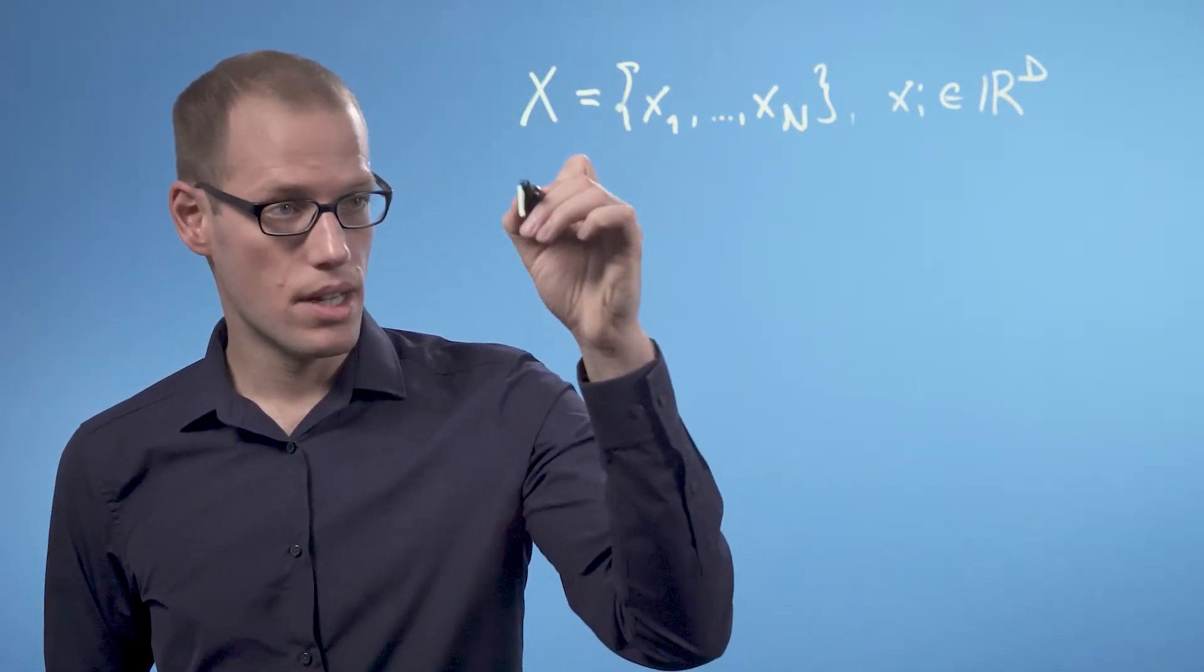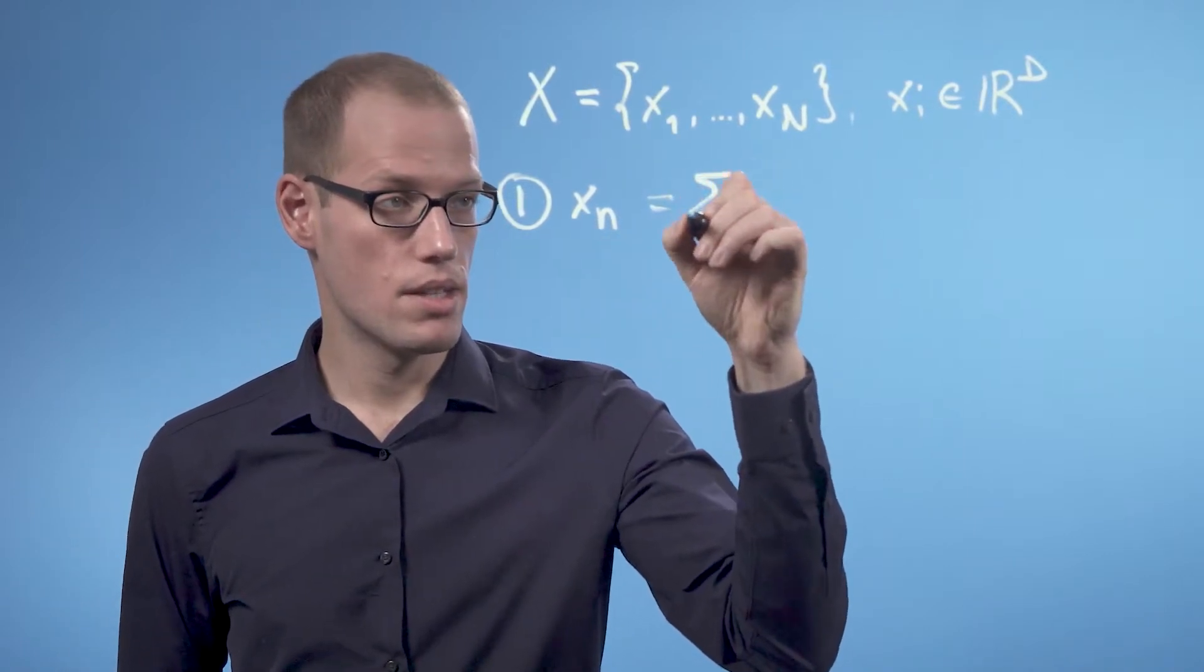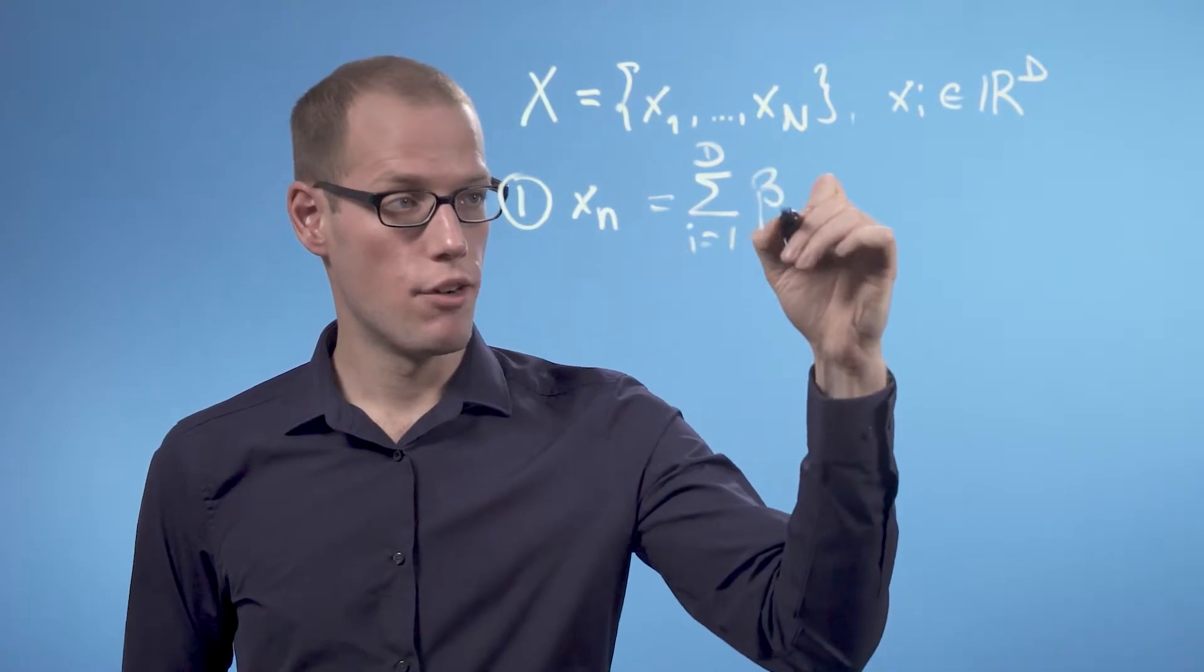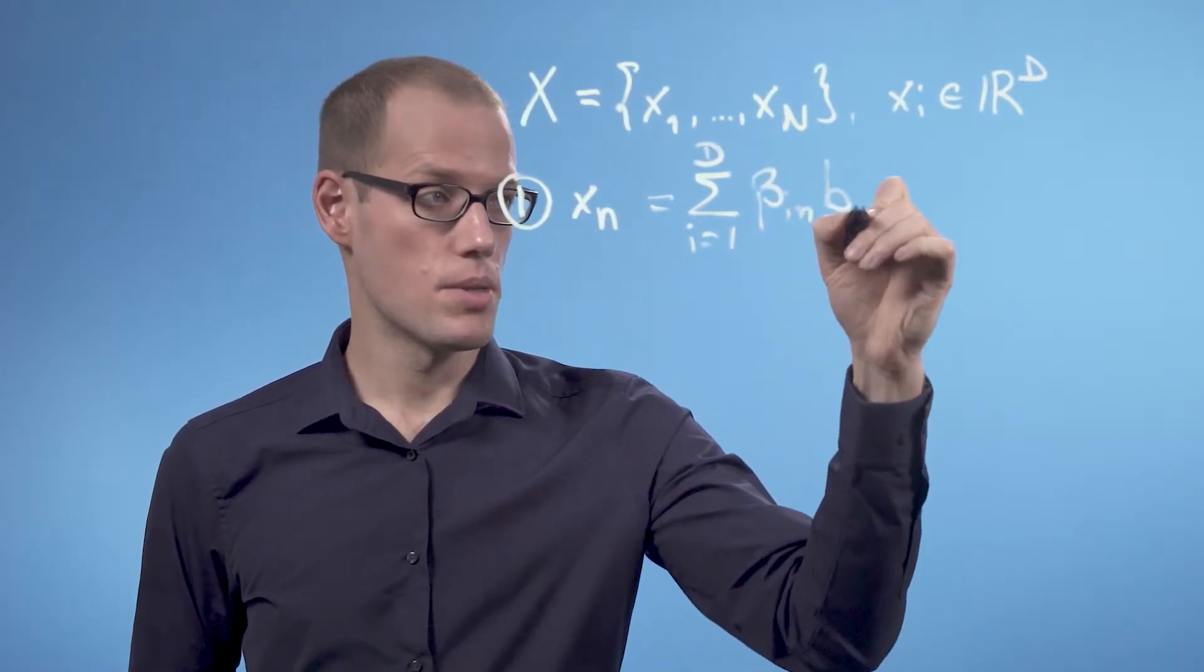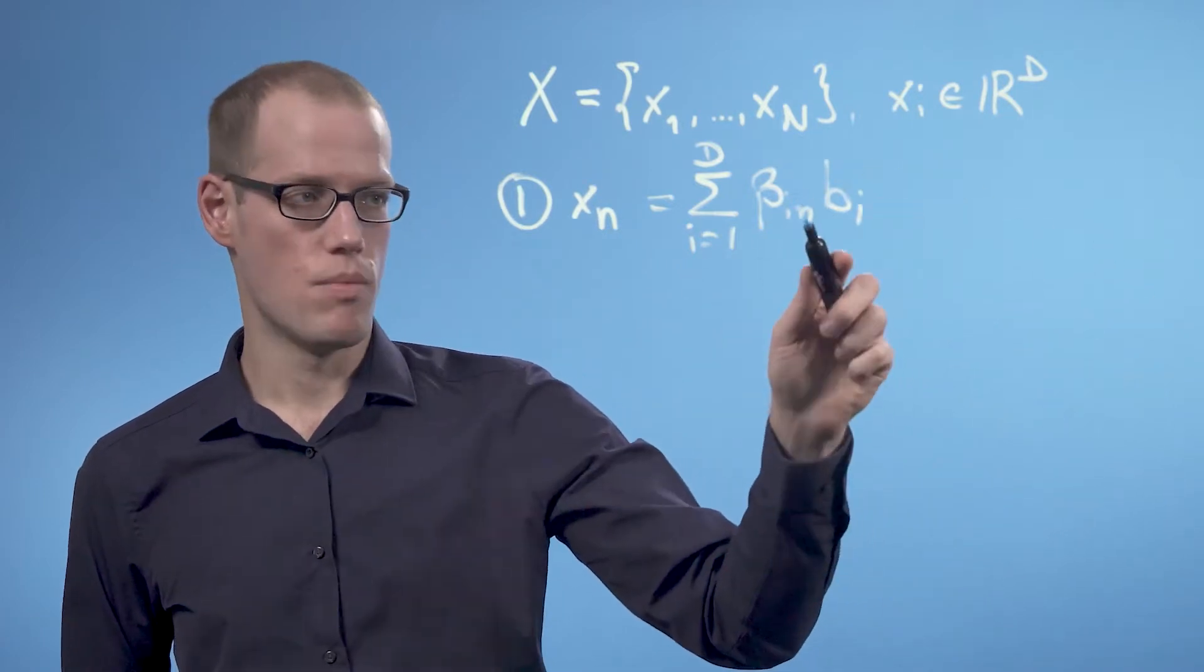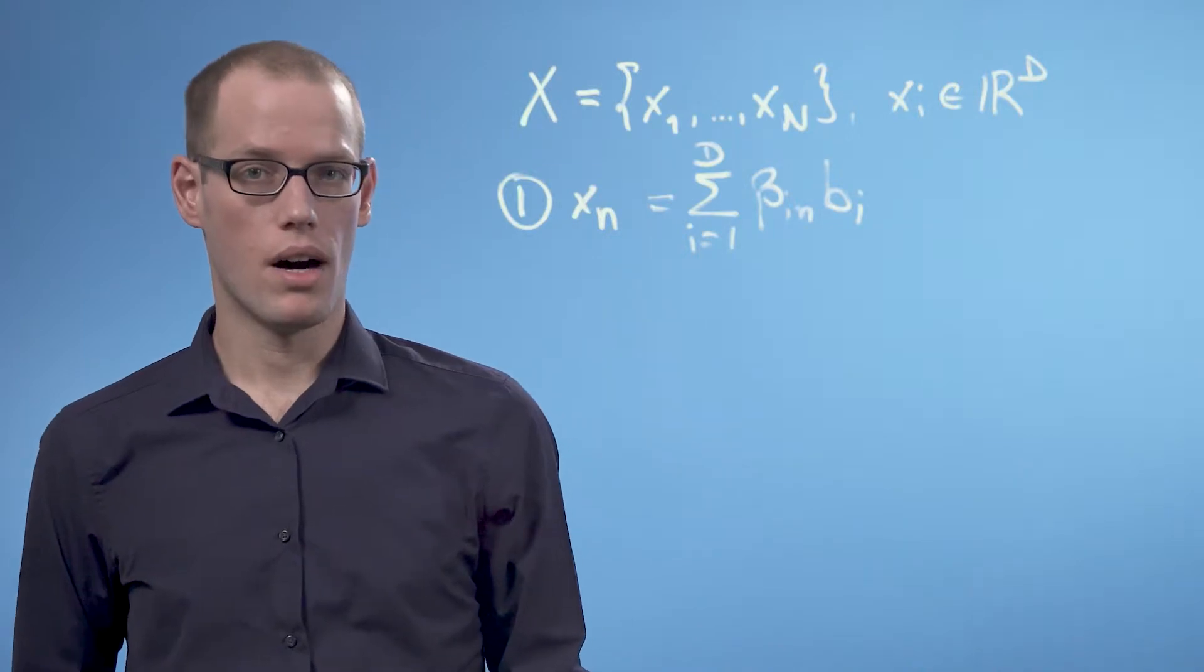So let's write this down. X_n can be written as the sum from i equals 1 to d of beta_in times b_i, where in the following we will assume that the b_i are an orthonormal basis of R^d.